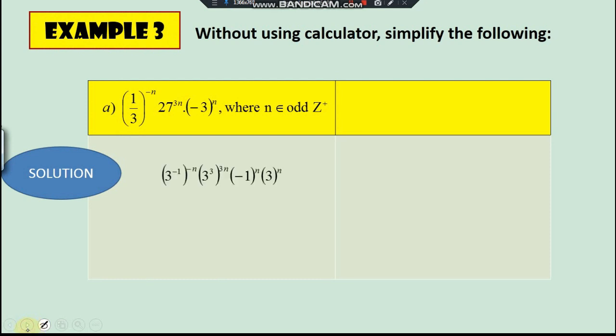Example three, the same thing, but a little bit challenging here. What will happen if you have one over three to power of negative n, 27 to the power of three n, and then negative three to power of n? Okay, so now just let one over three to be three to power of negative one, 27 is three to power of three, negative one can be taken out power of n, and then three to power of n also. So what happen next would be...